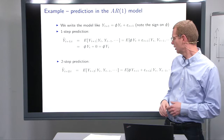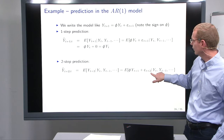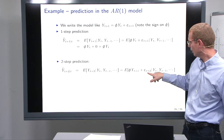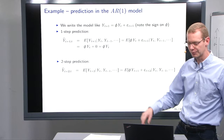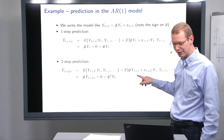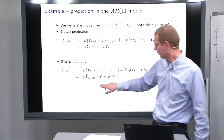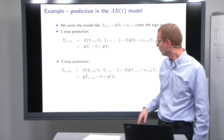For the two-step prediction, we pretty much do the same thing. We insert what y at t plus 2 is — essentially the same form as before, except that t is now plus 1 everywhere. The expectation of epsilon at t plus 2 is 0, so we're left with phi times the expectation of y at t plus 1 given t, which we just computed. That gives us phi squared times y_t.